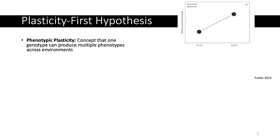One of the underlying themes of this talk is going to be the plasticity-first hypothesis. But first I want to talk about phenotypic plasticity, which is the basic concept that one genotype can produce multiple phenotypes across environments. That's shown here in Susan Foster's 2013 Animal Behavior paper, where she shows that one population in environment A displays a different behavioral phenotype than the same population in environment B.